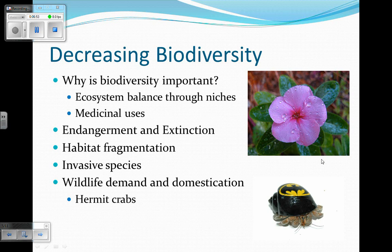Another reason we are losing biodiversity is organisms becoming endangered or extinct. Endangered means they're almost extinct; extinct means they're completely gone forever. One cause is habitat fragmentation — breaking up a habitat. So if we have a lovely forest in Minnesota and then build a city right through the middle of it with roads and buildings, we've broken up that habitat into smaller forests. A smaller forest can't hold as much of a population, so there's less chance they'll survive.